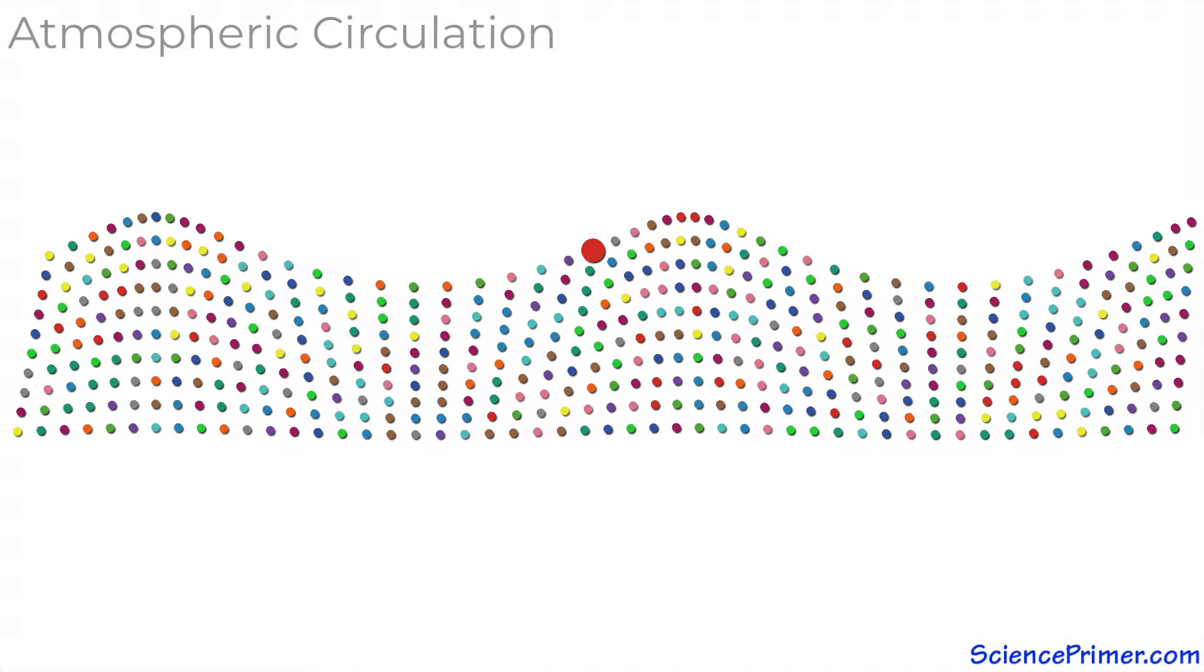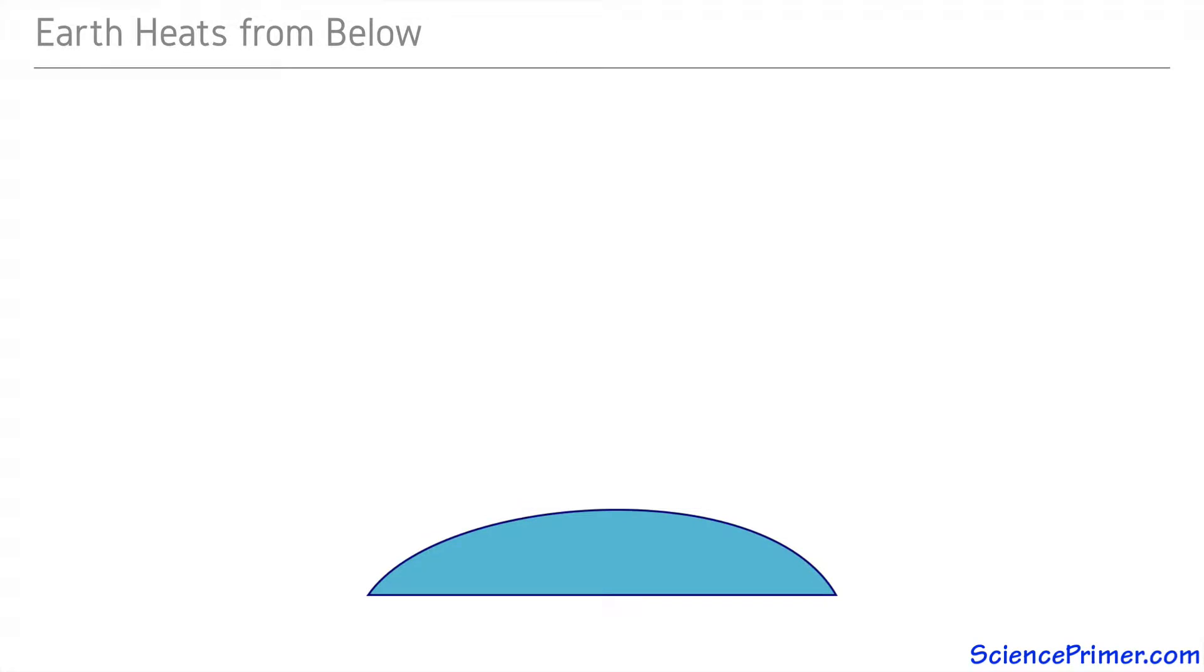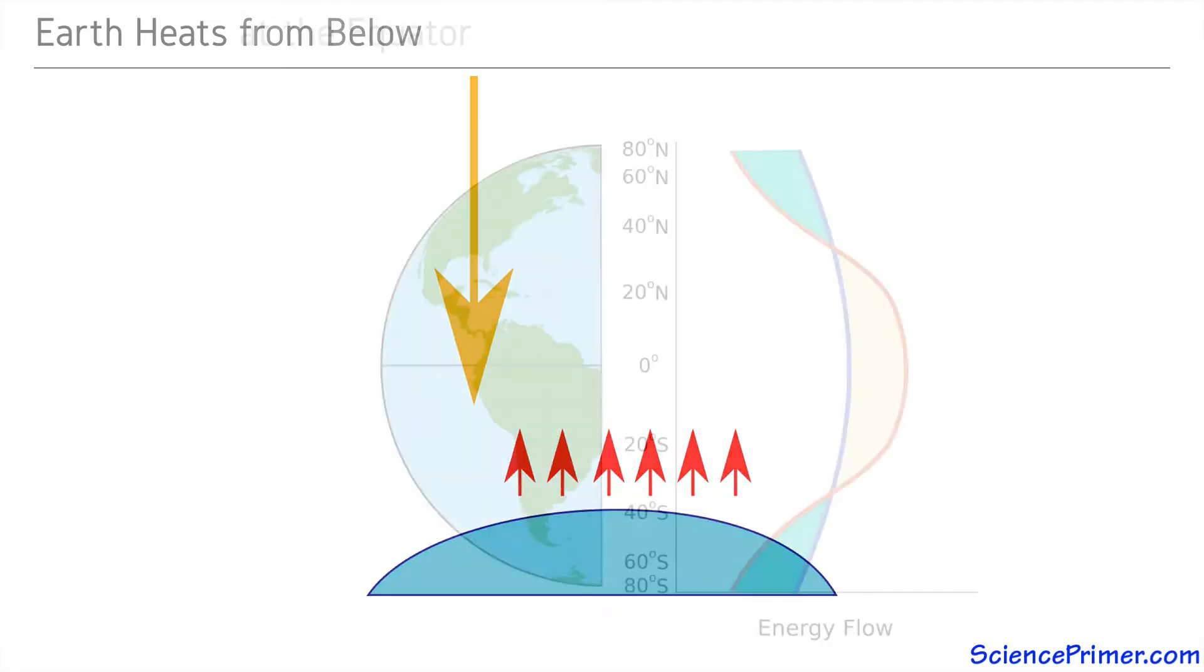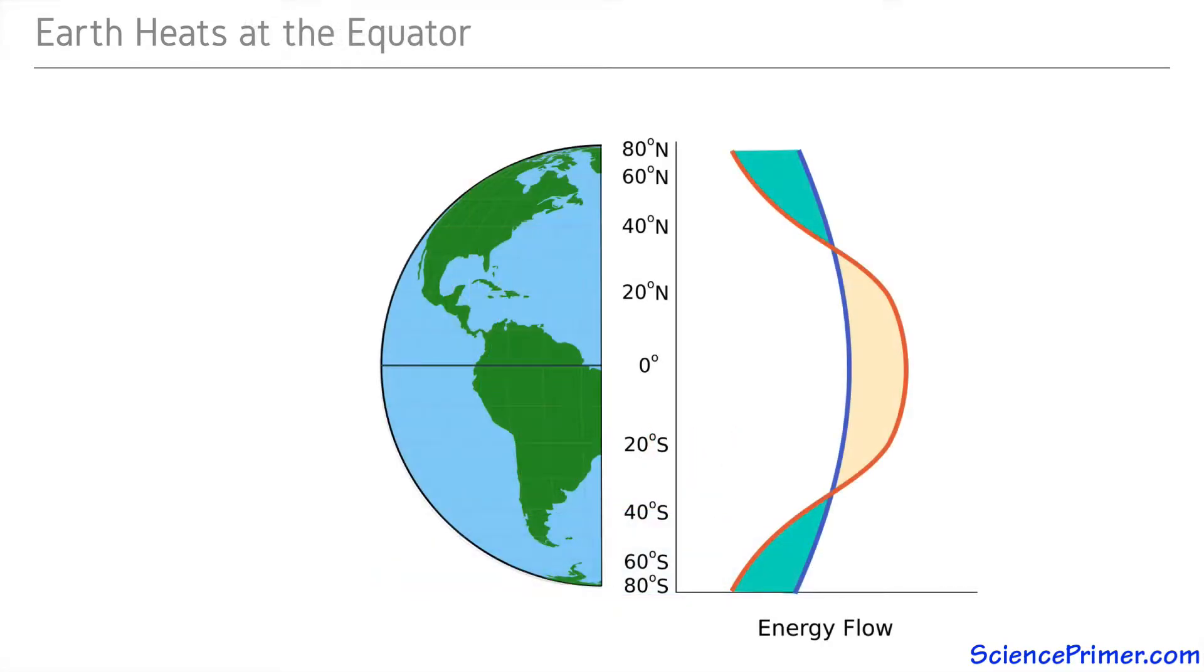A number of factors drive circulation of air in the atmosphere. One is that the atmosphere is heated from below. Short wavelength radiation that passes through the atmosphere is absorbed by the ground and then re-radiated into the atmosphere as longer wavelength infrared radiation.